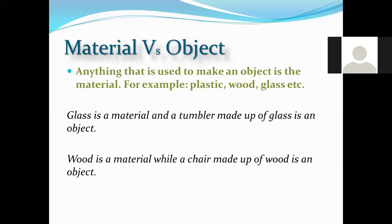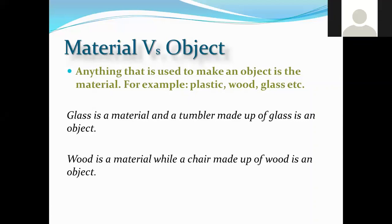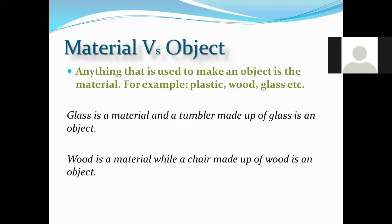Materials are substances that make objects; objects do not make materials. You should know this fundamental difference before moving further in the chapter. Cotton fabric is a material; if you make a cotton shirt or bag out of it, those are objects. Similarly, wood is a material and a chair made up of wood is an object.